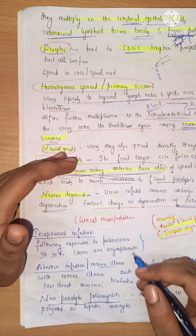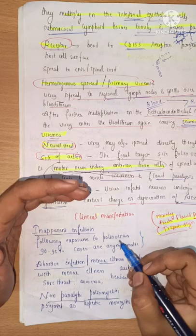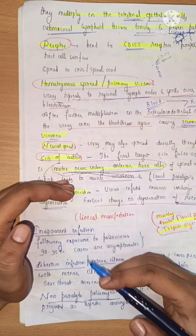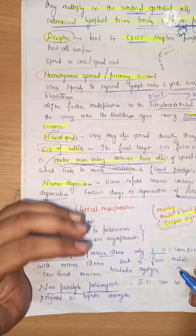In the next phase, abortive infection and minor illness: among the 90 to 95 percent of cases who have got the infection, if their immunity is stronger the virus will not go into the progressive stage — it will be diminished, especially if the child has already taken the vaccine.